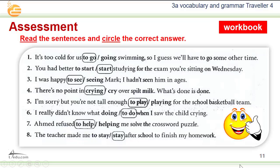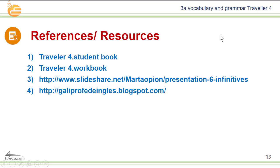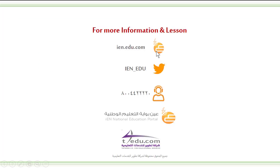So this is the model answer. That's the end of today's lesson. Today we studied how to form an infinitive and ing form — an infinitive is 'to' plus the base form of the verb, and the negative form is to place 'not' before the infinitive. We mentioned the uses of the ing form and studied collocations with get and take. These are today's references and resources. For more information, you can visit our website, contact our Twitter account, or call us on our free phone. Thank you for listening. Wassalamu alaikum wa rahmatullahi wabarakatuh.